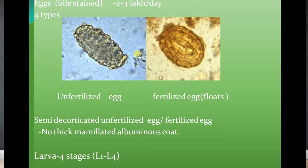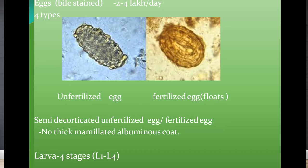When you collect stool samples from the patient, you find four types of eggs. The first is an unfertilized egg and the second is a fertilized egg — the major difference is their shape. Fertilized eggs float in saturated solution, which helps with the concentration technique. Both unfertilized and fertilized eggs can also be found as semi-decorticated eggs, where the outer thick mammillated albuminous coat is present. When that coat is missing, it is called a decorticated egg. In addition to adult and egg stages, the parasite exists in larval stages L1 to L4.